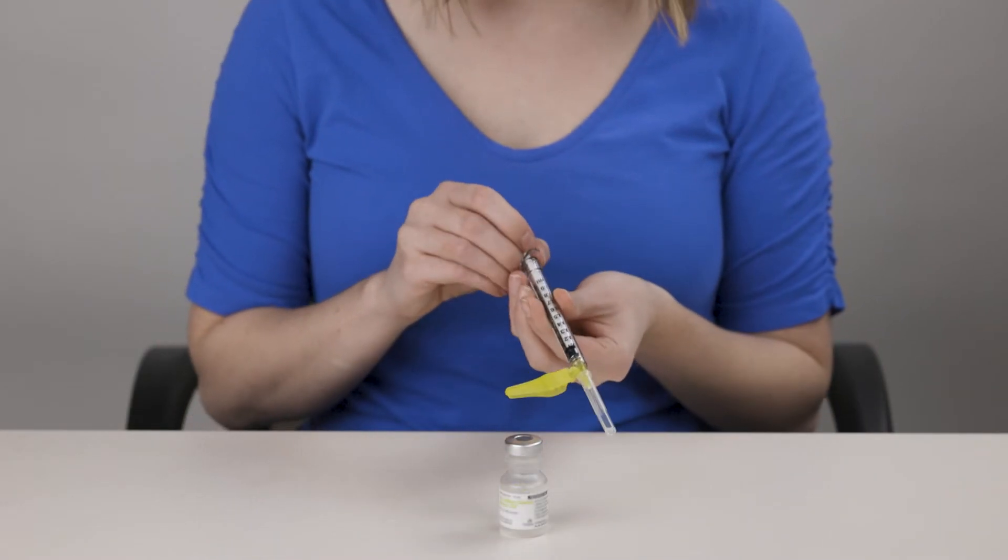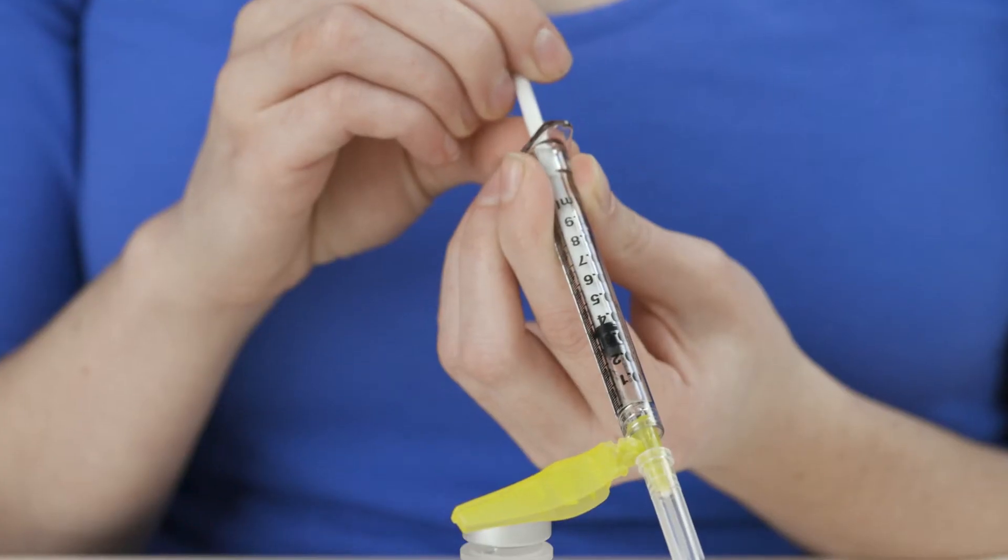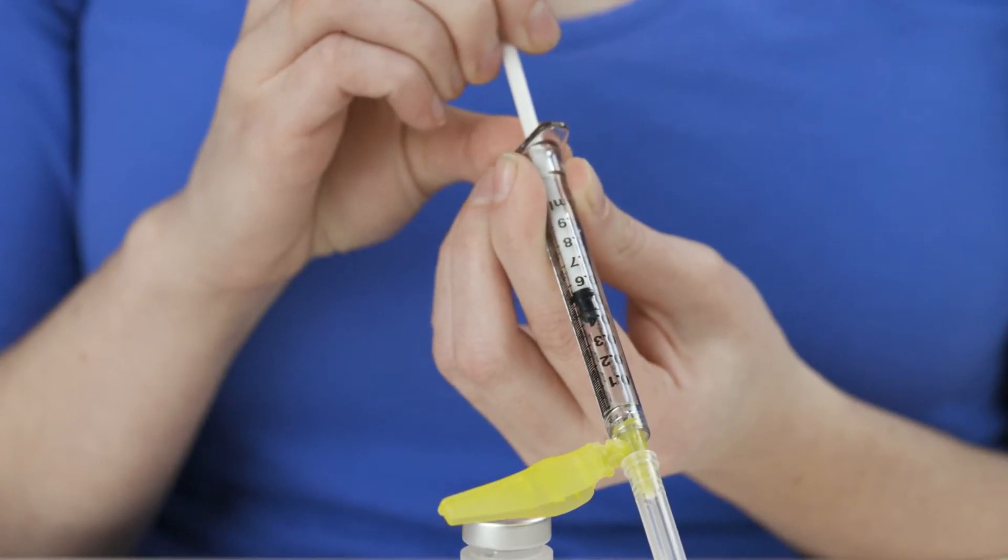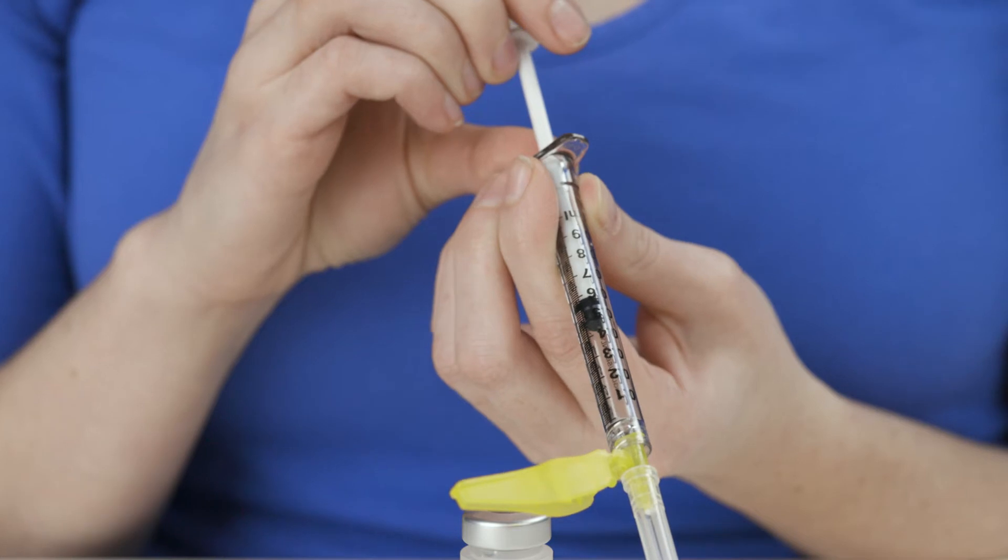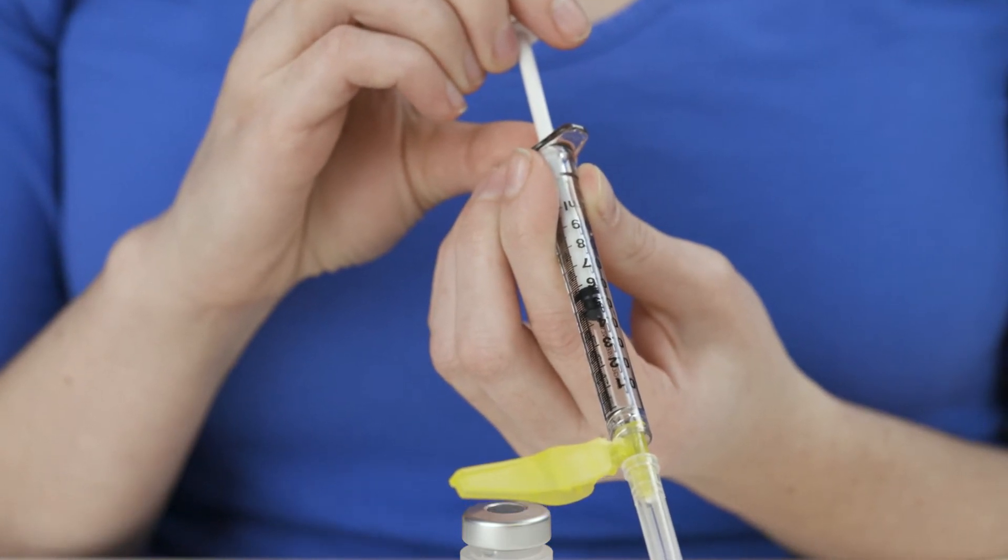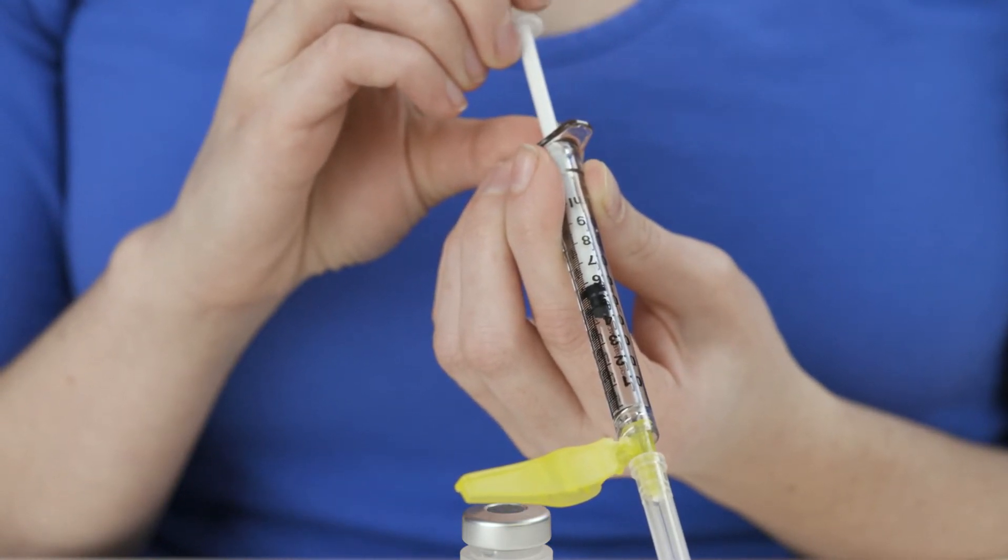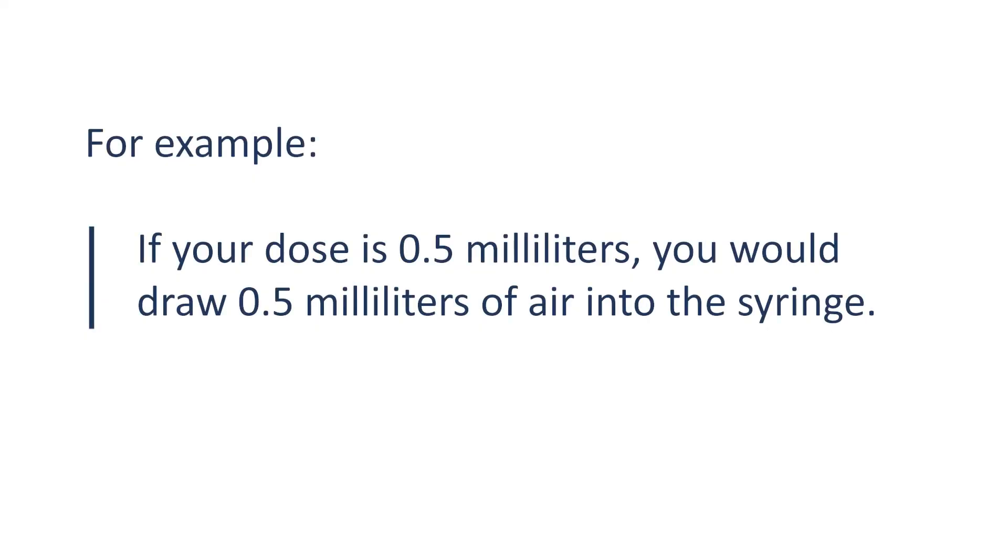With the needle cover on, pull back the plunger and draw air into the syringe. The amount of air you draw into the syringe should equal your dose of medication. For example, if your dose is 0.5 mL, you would draw 0.5 mL of air into the syringe.